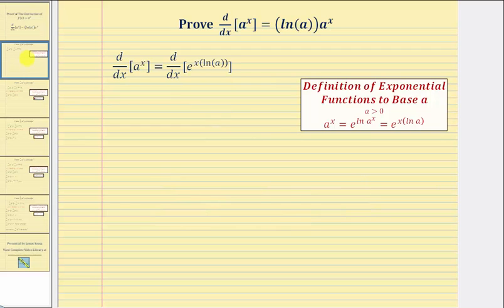In this proof, we'll be using the definition of an exponential function to base a, where a to the x is equal to e raised to the power of natural log a to the x. If we apply the power property of logarithms to the exponent, we can also write this as e raised to the power of x times natural log a.